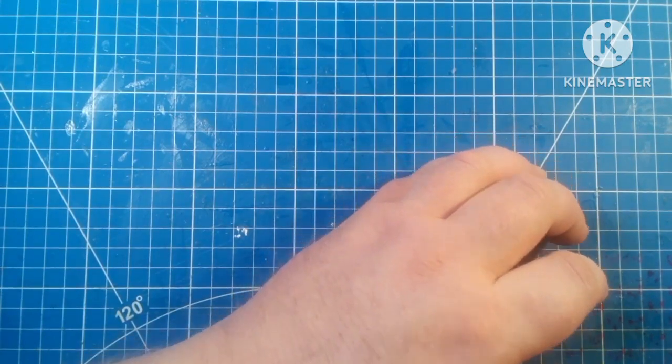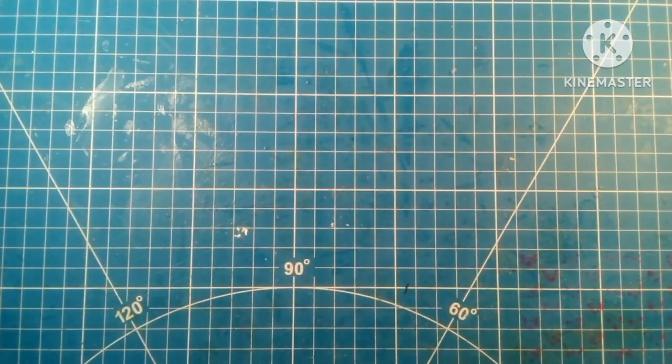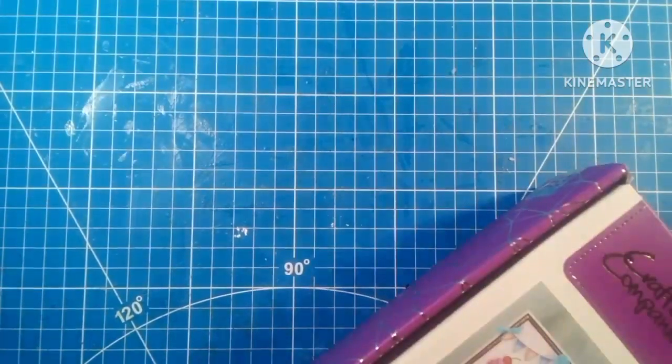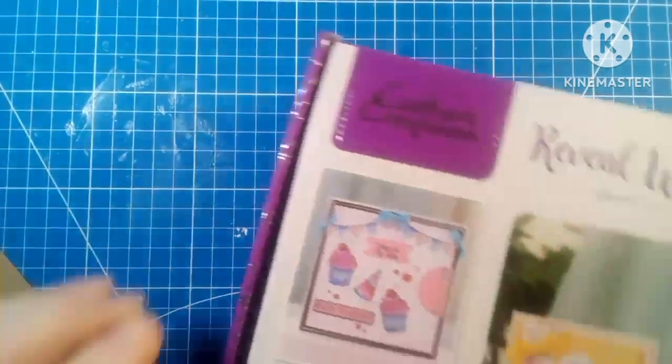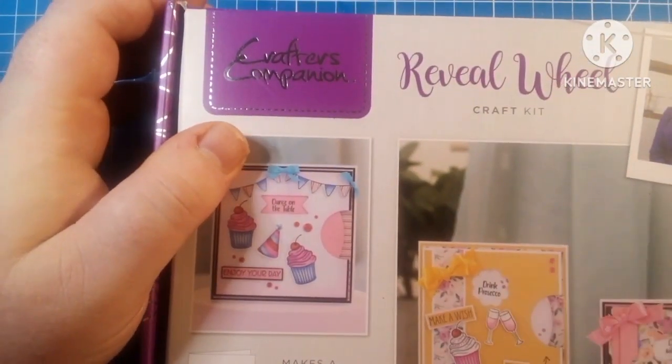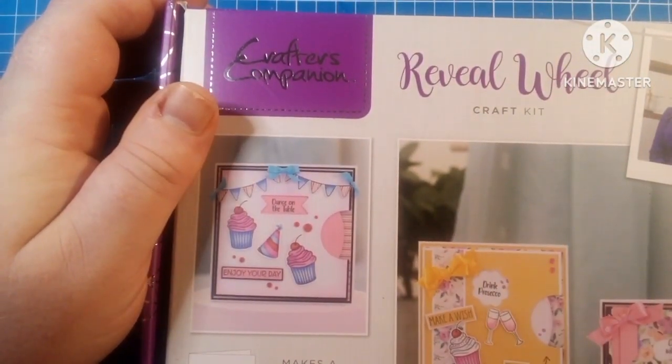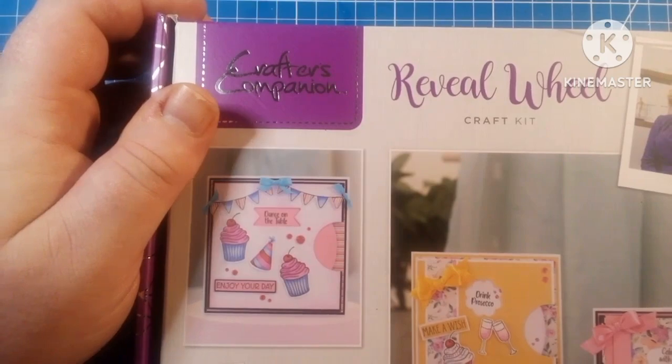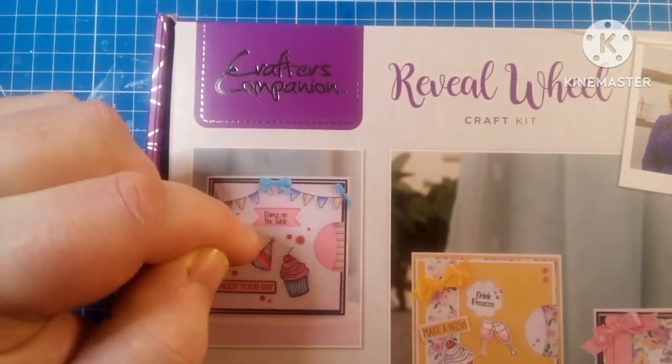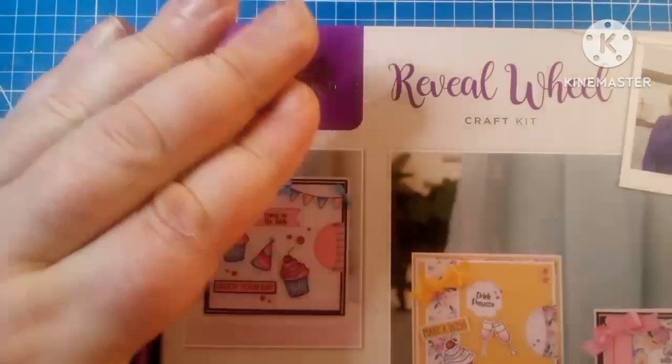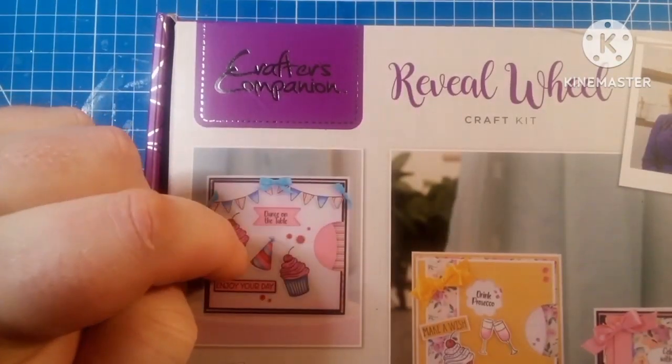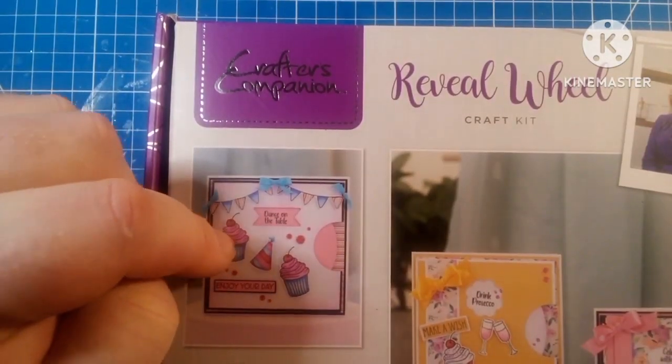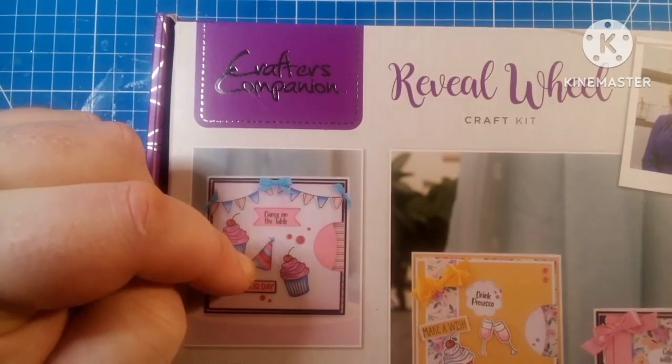Well, first of all, I want to show you what collection I'm using. I am using the Crafter's Companion Reveal Wheel card kit. I'm just using papers and stamps from this—the dies and everything, not really, but most everything I'm using on all 15 cards came from this box.